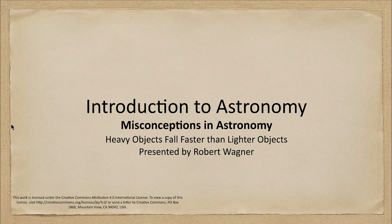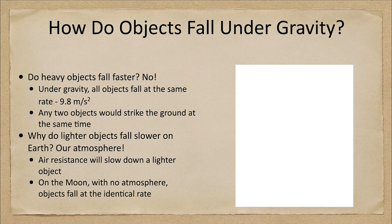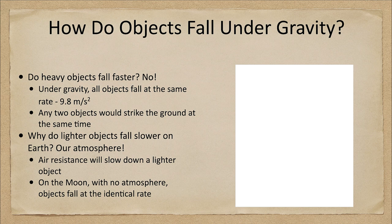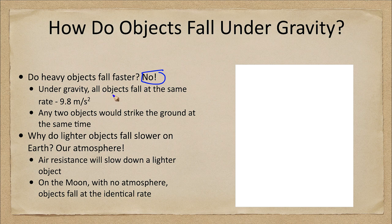So let's look at what we know about gravity and these types of objects. First of all, our quick answer is: do they fall faster? No. Under gravity, all objects will fall at the exact same rate.